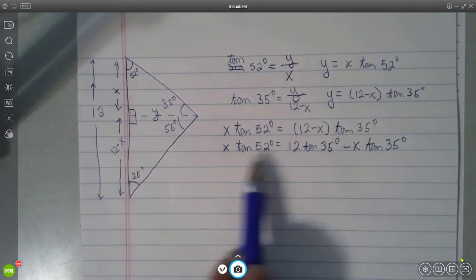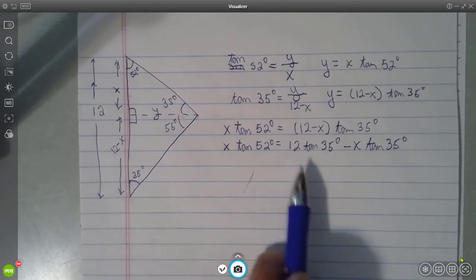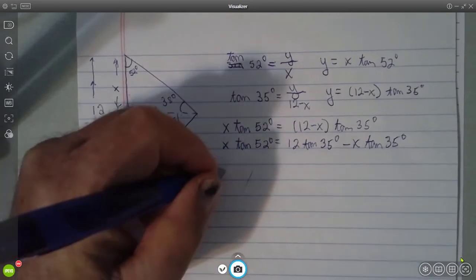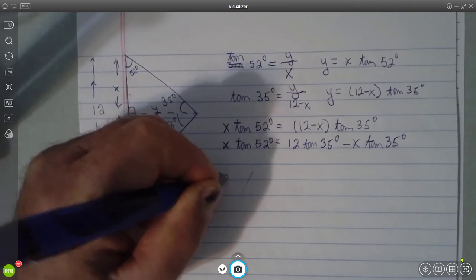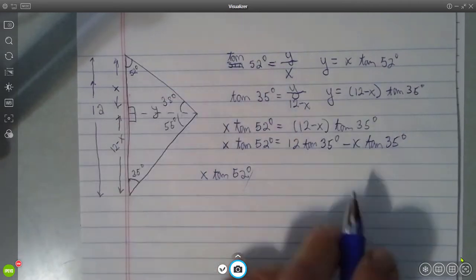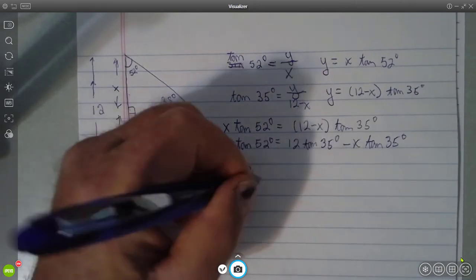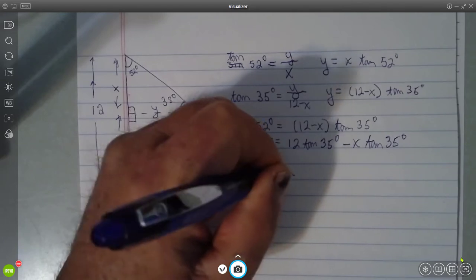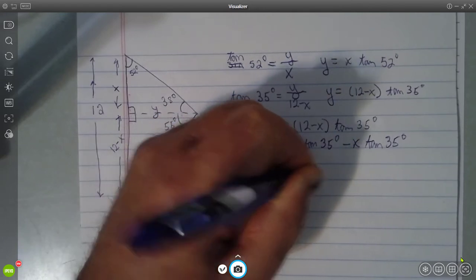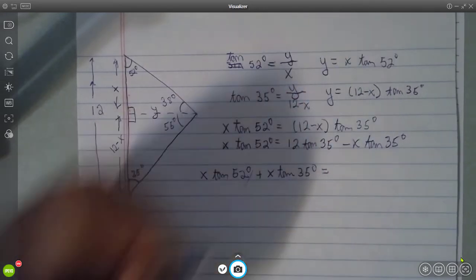What we'd like to do is get the two terms with x's on one side of the equation and the numbers on the other. So we have x tan 52 degrees, this will be added over here, x tan 35 degrees is equal to 12 tan 35 degrees.